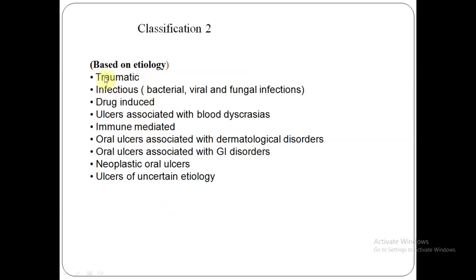This is another classification, added to make it simpler to understand. Based on etiology, you can divide or group ulcers as: traumatic, infectious, drug-induced, ulcers associated with blood dyscrasias, immune mediated, oral ulcers associated with dermatological disorders, oral ulcers associated with GI disorders, neoplastic oral ulcers, and ulcers of uncertain etiology. Apthous ulcers come under ulcers of uncertain etiology.